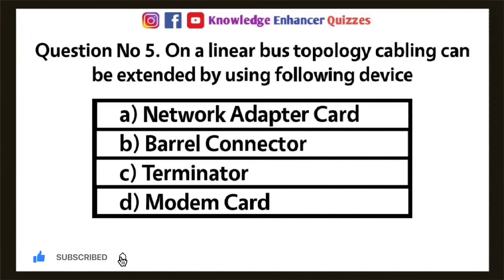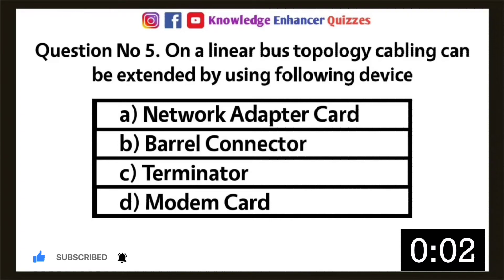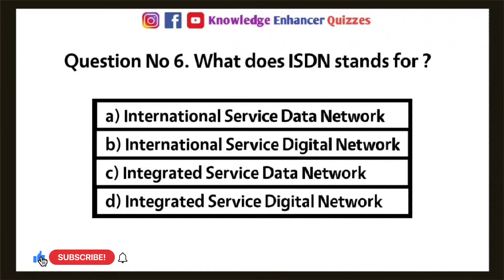Question 5: On a linear bus topology, cabling can be extended by using the following device — Option A: Network Adapter Card, Option B: Barrel Connector, Option C: Terminator, Option D: Modem Card. Option B is the right answer.